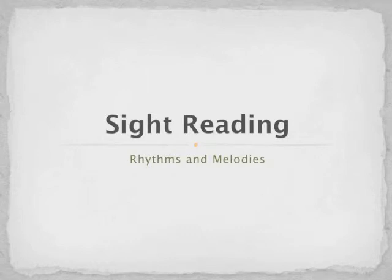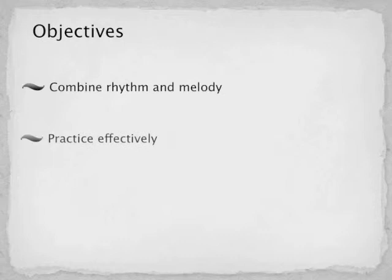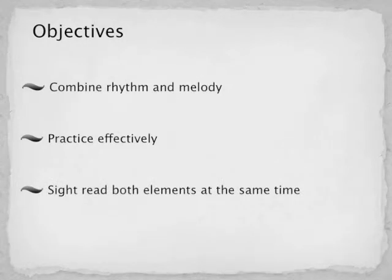This is the fifth module in helping you begin to understand how to read music on sight. In this module, we will combine the elements of rhythm and melody. You will learn how to break down sight reading exercises for effective practice, and you will be able to sight read both elements at the same time.